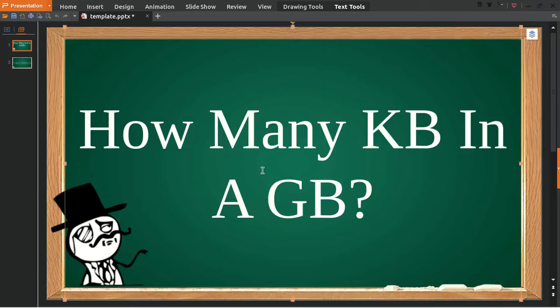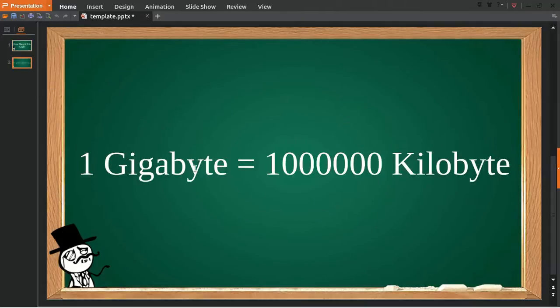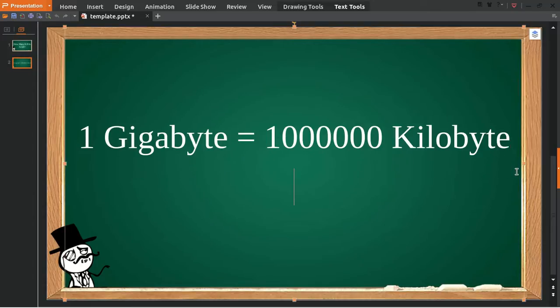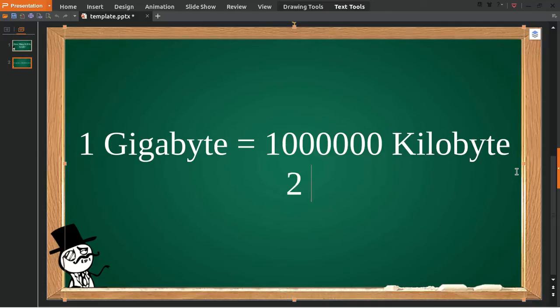To solve this problem, I have the answer here. Here's the answer: one gigabyte is equal to one million kilobytes. So if someone asks you how big is two gigabytes in kilobytes, we can solve this problem.